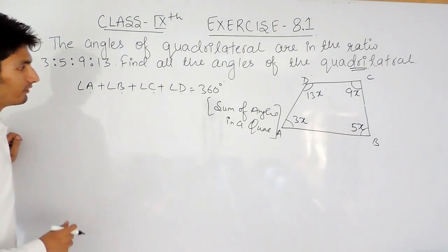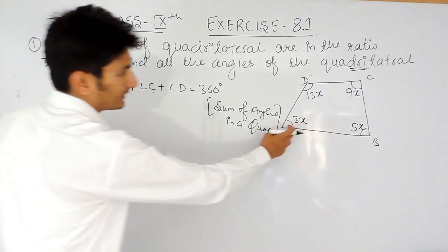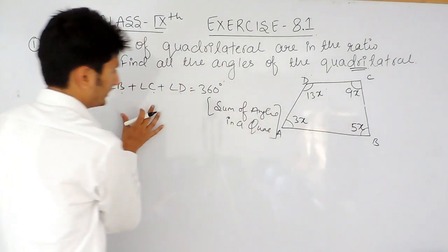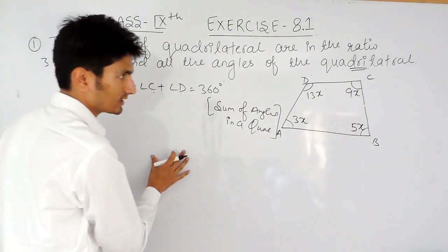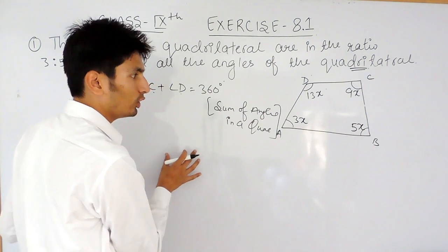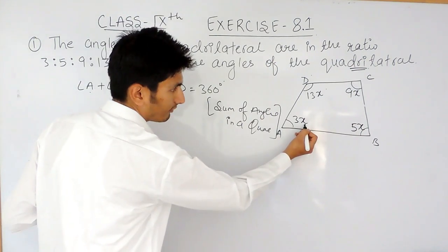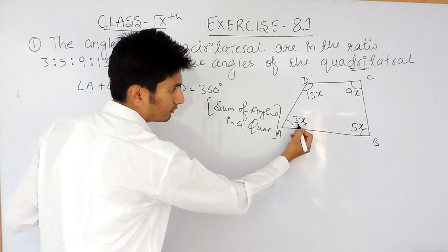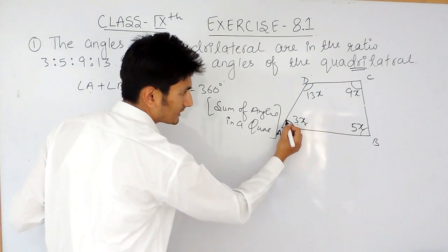you have to substitute the values of A, B, C, D. These values, you have to substitute here and this will be equal to 360 and by that you can find the value of x and if you know the value of x, multiplying this value with 3 will give you the value of this angle.